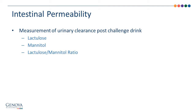The intestinal permeability assessment looks at two non-metabolized sugars, lactulose and mannitol. The test measures the ability of these two sugar molecules to permeate the intestinal mucosa. The patient drinks a pre-measured amount of these two sugars in a solution. Insight into the degree of intestinal permeability as well as malabsorption is reflected in the levels of these two sugars measured in the urine sample collected over the next six hours.